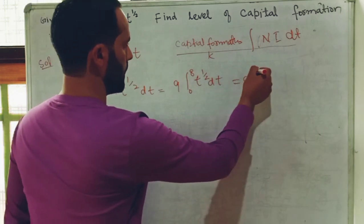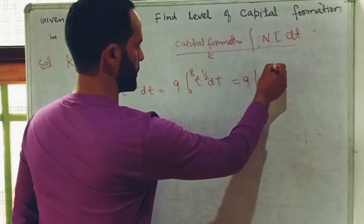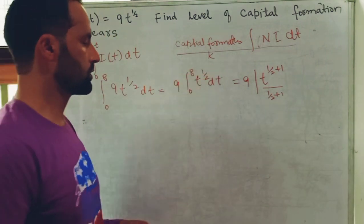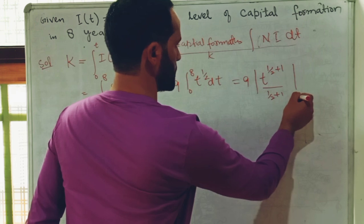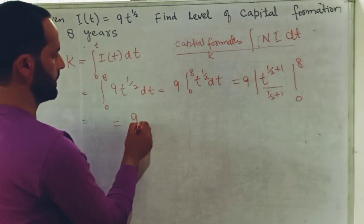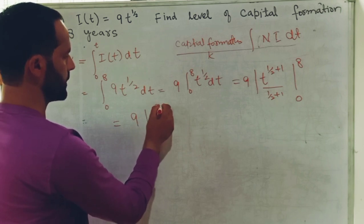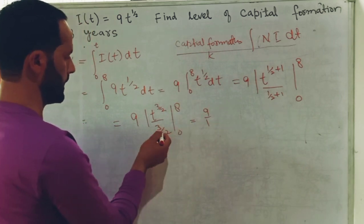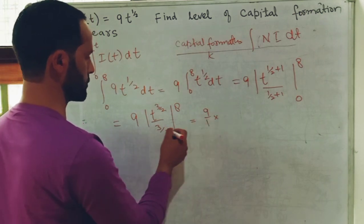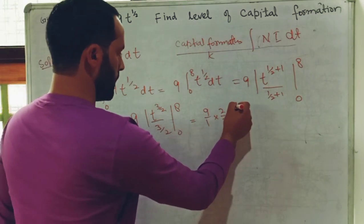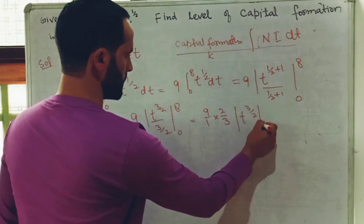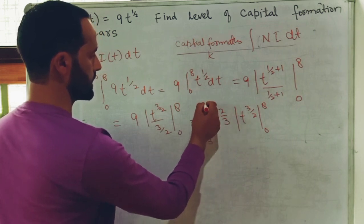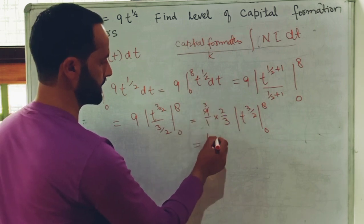This is equal to 9 times the integration of t^(1/2). Using the power rule, integration of t^(1/2) is t^(1/2 + 1) divided by (1/2 + 1), evaluated from 0 to 8. This becomes 9 · t^(3/2) divided by (3/2), evaluated from 0 to 8. Transposing (3/2) to the denominator gives its reciprocal, so this becomes 9 · (2/3) · t^(3/2), which simplifies to 6t^(3/2).